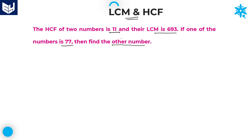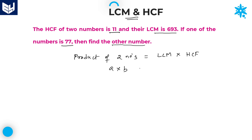Out of two numbers, one number is given and the second number is not given. The LCM is given and also HCF is given. The concept for this model is: the product of two numbers is equal to LCM into HCF. That is, A into B is equal to LCM into HCF.